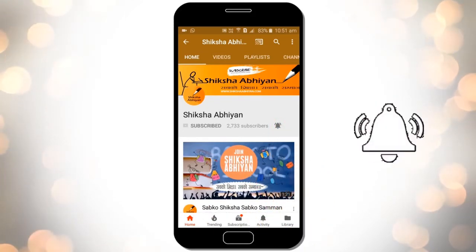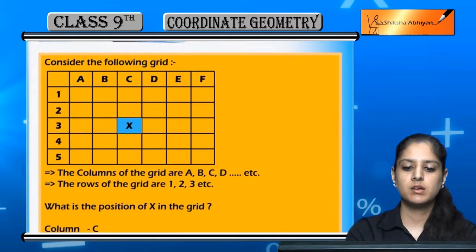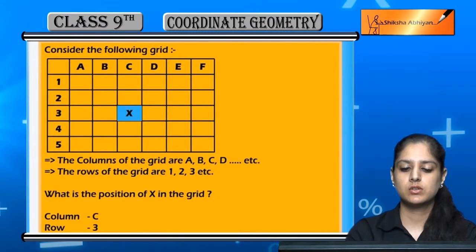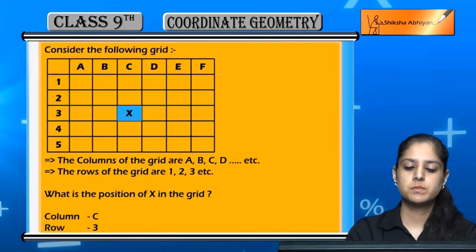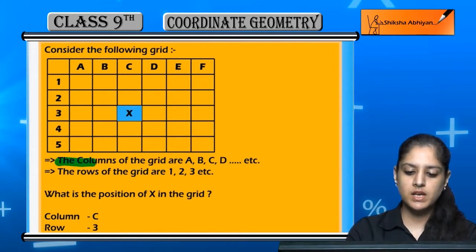Now the next topic is what are coordinates. To understand coordinates, we will consider a grid. You can see this is a grid which has both columns and rows.